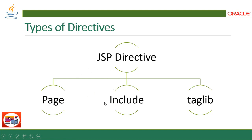JSP directives are classified into three types: page directive, include directive, and tag library directive. Page directive defines page-dependent attributes such as scripting language, error page, buffering requirements, importing error definitions, and more. This directive helps the container understand what all things you want to include in your JSP while converting it into the servlet. Include directive includes a file during the translation phase — when converting your JSP into the servlet, this directive includes the class or JSP and combines it during the translation phase.